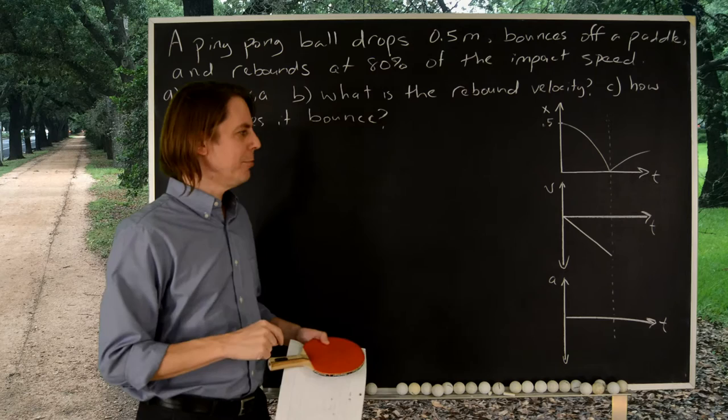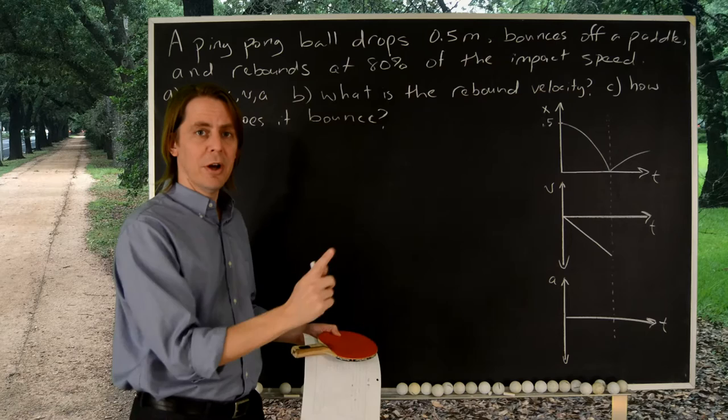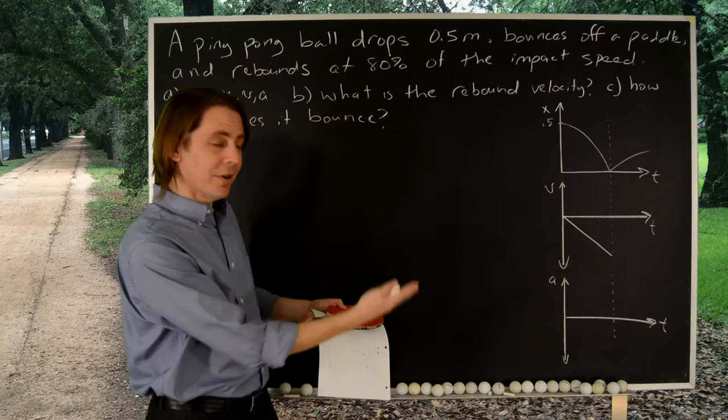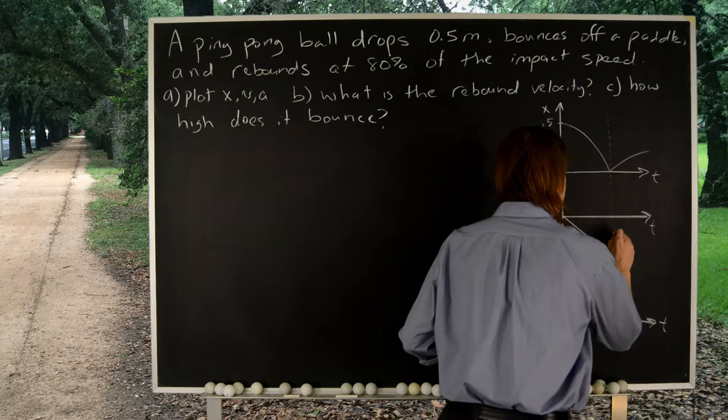And then, suddenly, the velocity changes direction. It goes from down to up. So the velocity goes from negative to positive. So it's actually, if we plot it like this, it looks like an instantaneous change. It's okay to make it do this. It suddenly goes up very much, very hard like that.